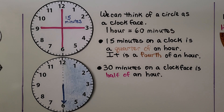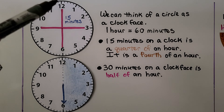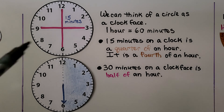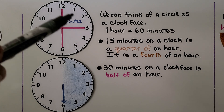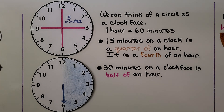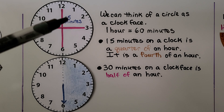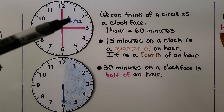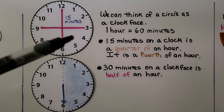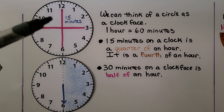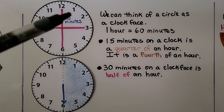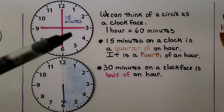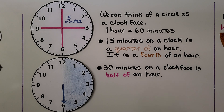We can think of a circle as a clock face. One hour is 60 minutes, and 15 minutes on a clock is a quarter of an hour. It's a fourth of an hour — one of four equal parts. 15 minutes is one of four equal parts of an hour.